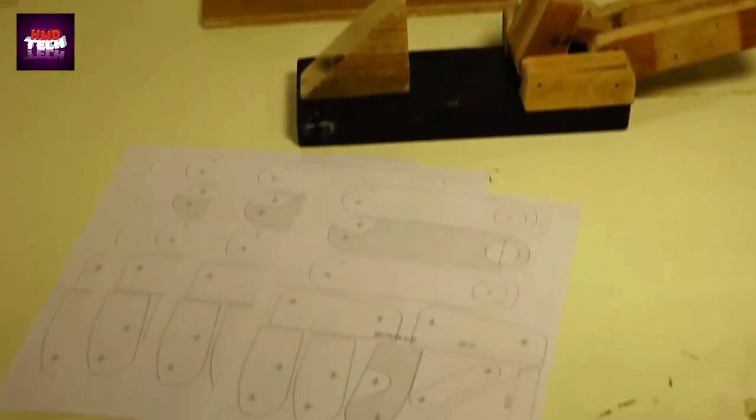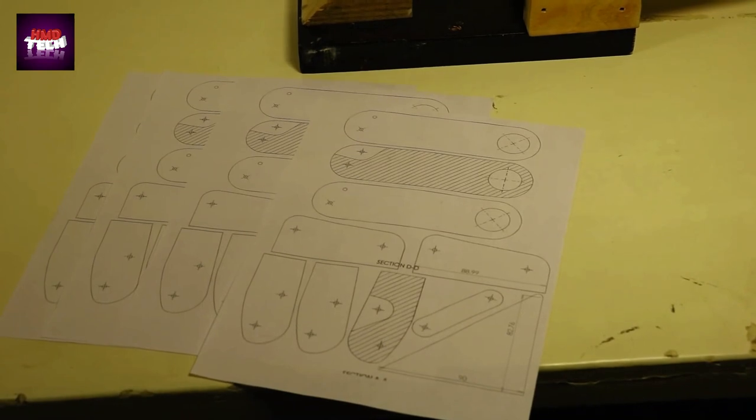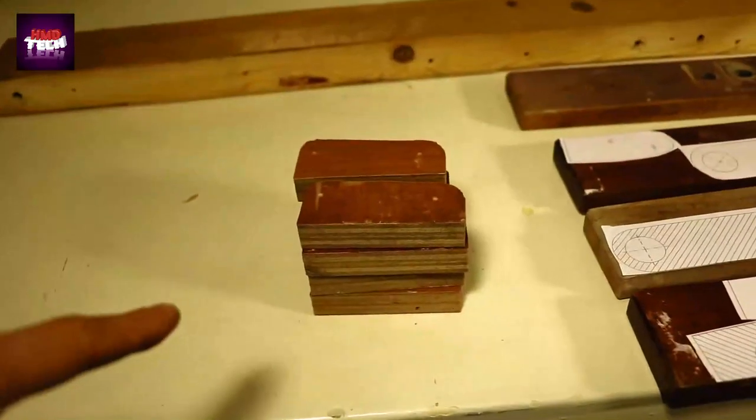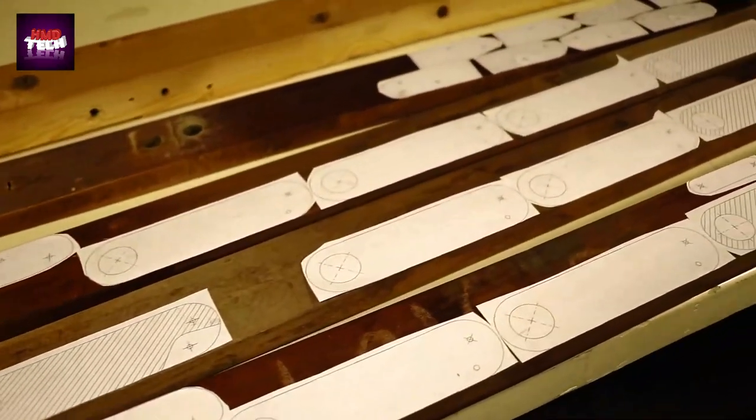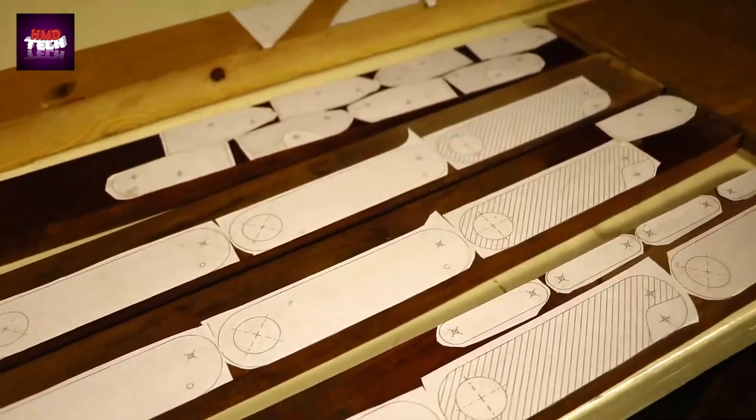After building another prototype, I printed out templates for all the parts I need. I already cut these parts from plywood and glued the rest of the templates on these pieces of hardwood, and now I'm going to make these parts.